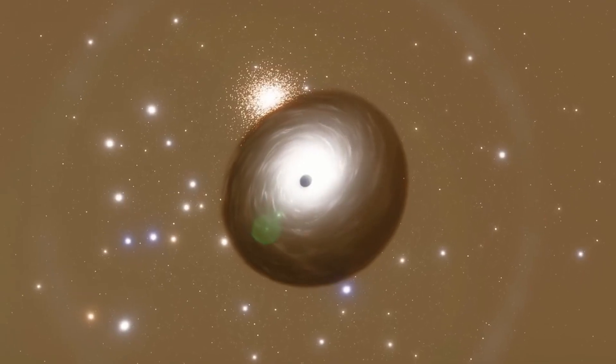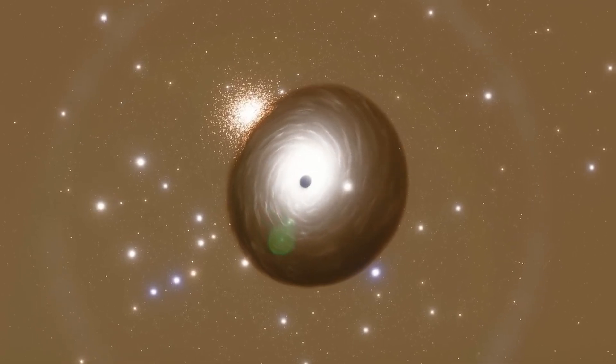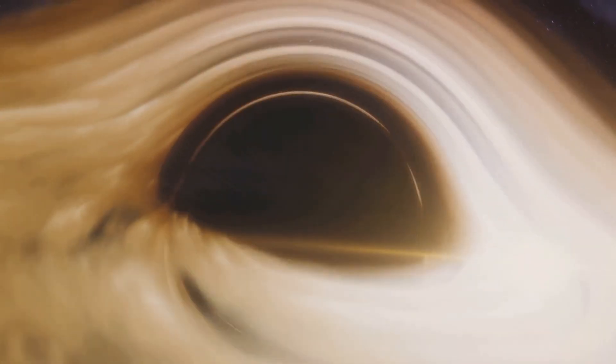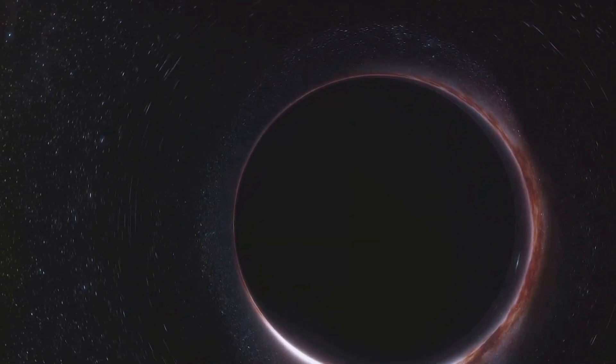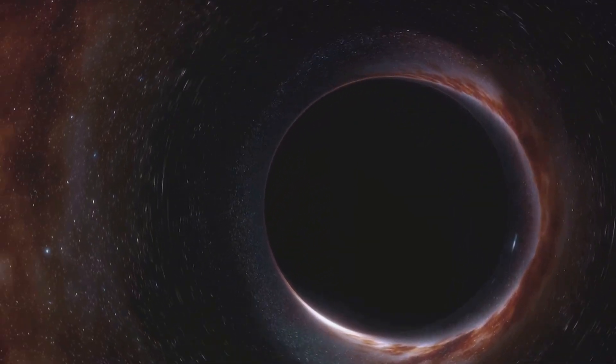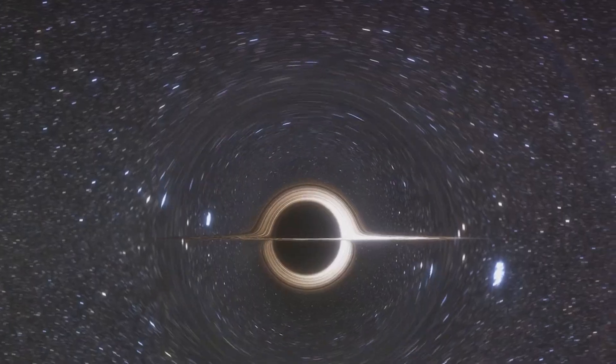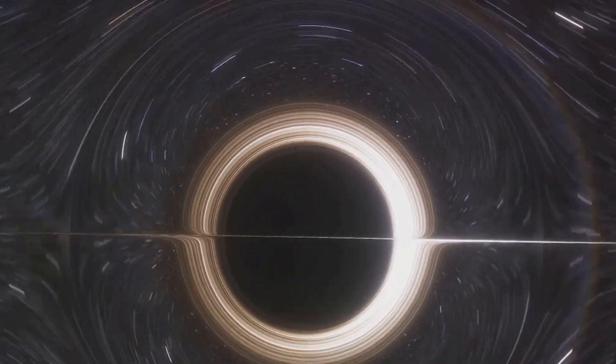known as the black hole-firewall paradox. This paradox introduces the concept of a firewall, a hypothetical surface that exists at the event horizon of a black hole. According to this theory, anything crossing the event horizon would be instantly incinerated. This idea, however, contradicts the principle of equivalence in Einstein's theory of general relativity, which suggests that crossing an event horizon should be a smooth and uneventful experience.